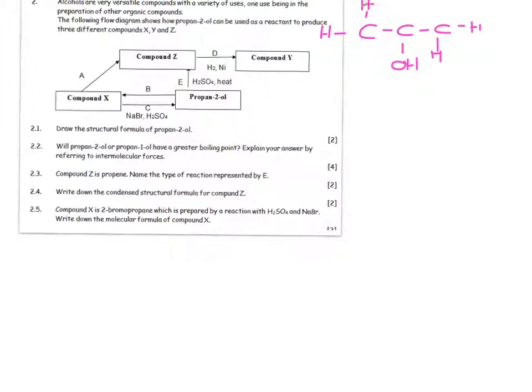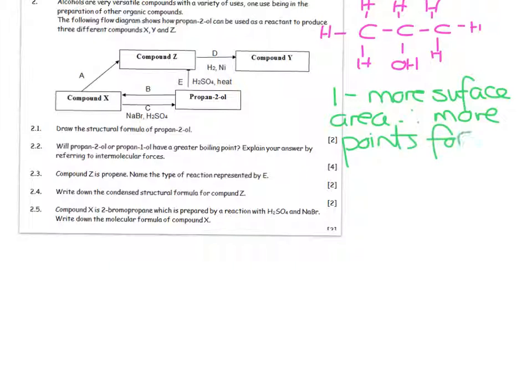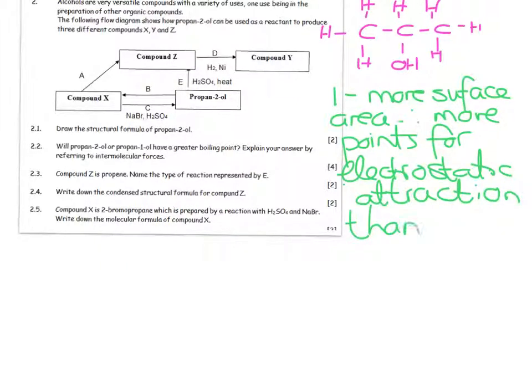Will propan-2-ol or propan-1-ol have a greater boiling point? Explain your answer by referring to intermolecular forces. Let's first think about who has the strongest intermolecular forces. Propan-2-ol is more of a cluster, looks more circular than if this alcohol group were out on the end. In other words, propan-1-ol has got more surface area, therefore more points for electrostatic attraction than propan-2-ol. Therefore, 1-ol has a higher boiling point.